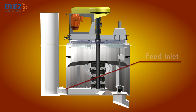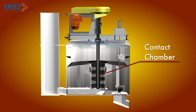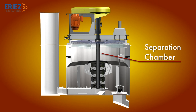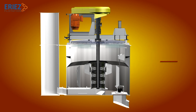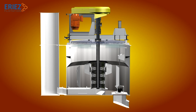The key components of the cell include the feed inlet, contact chamber, separation chamber, tailings discharge, froth discharge, and wash water system.